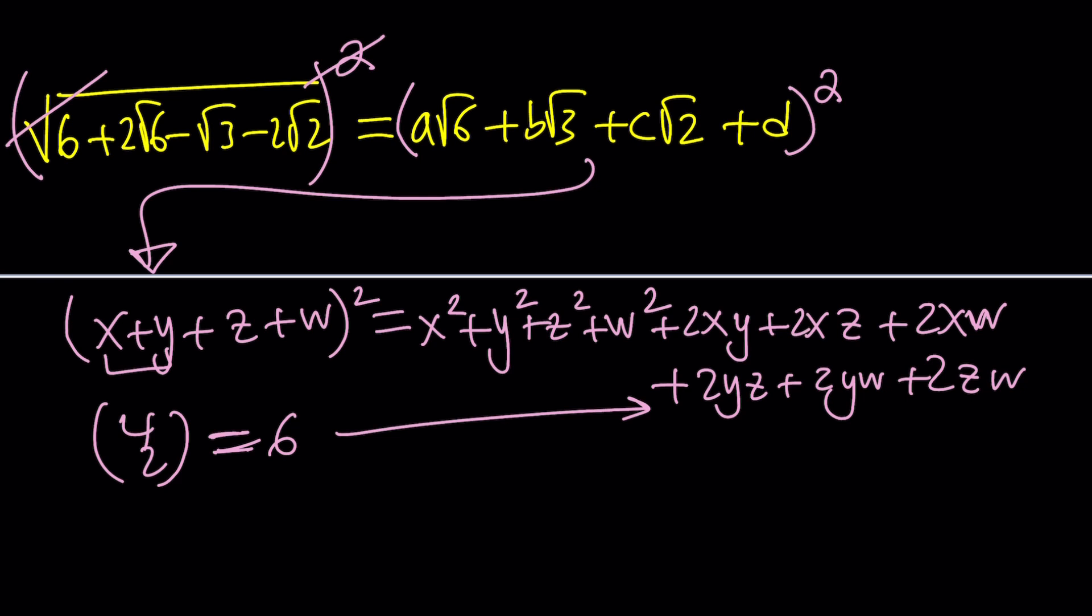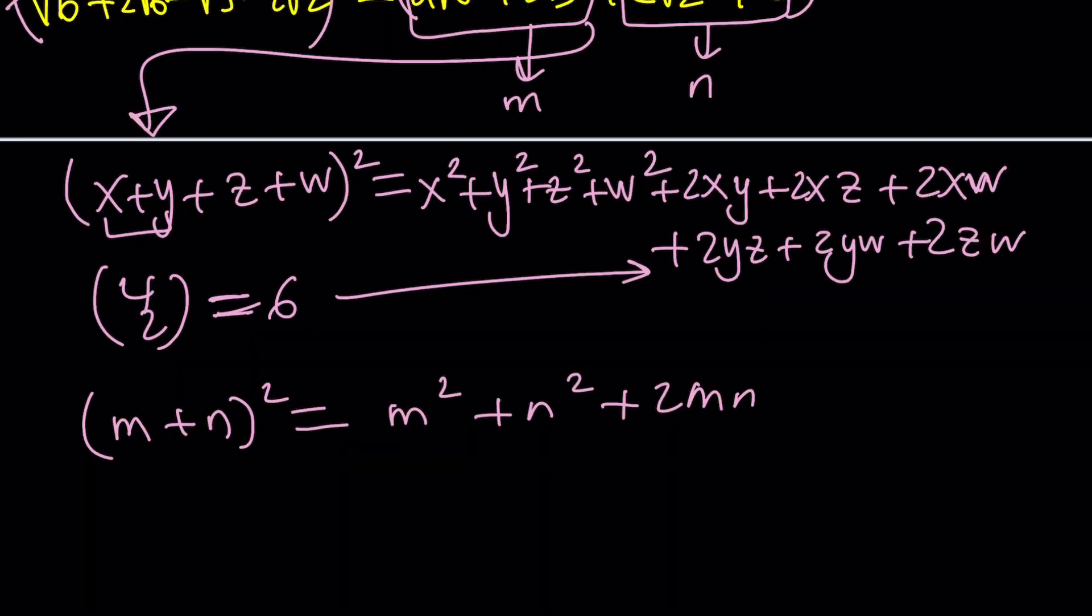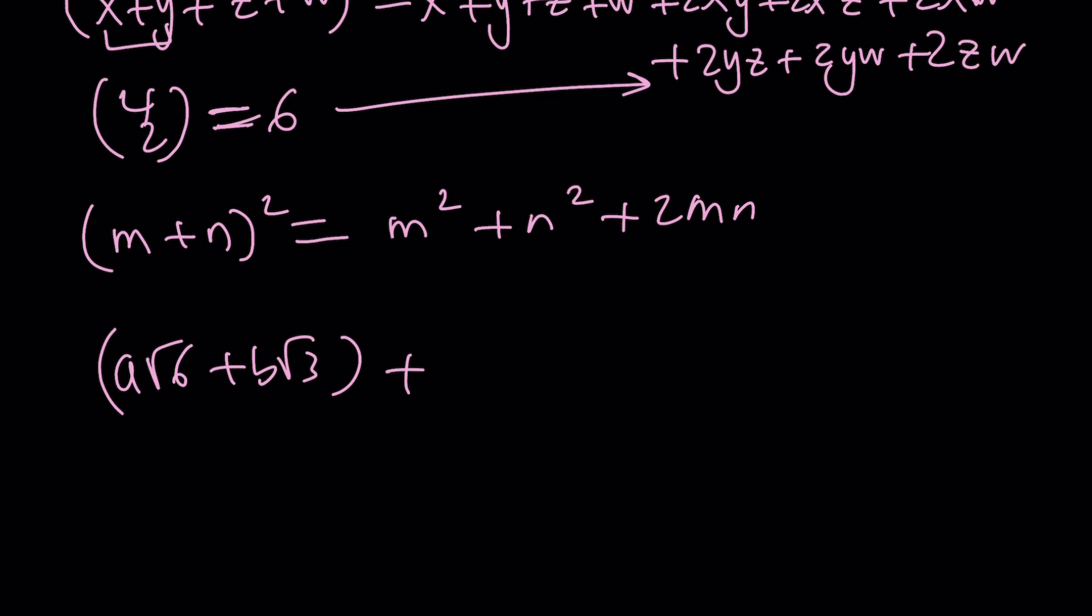If you don't want to use this formula, totally understand, then you can do the following. You can group these into two groups and treat it as m plus n squared. What is m plus n squared? m squared plus n squared plus 2mn. So we're going to treat that as an entity and that as an entity.